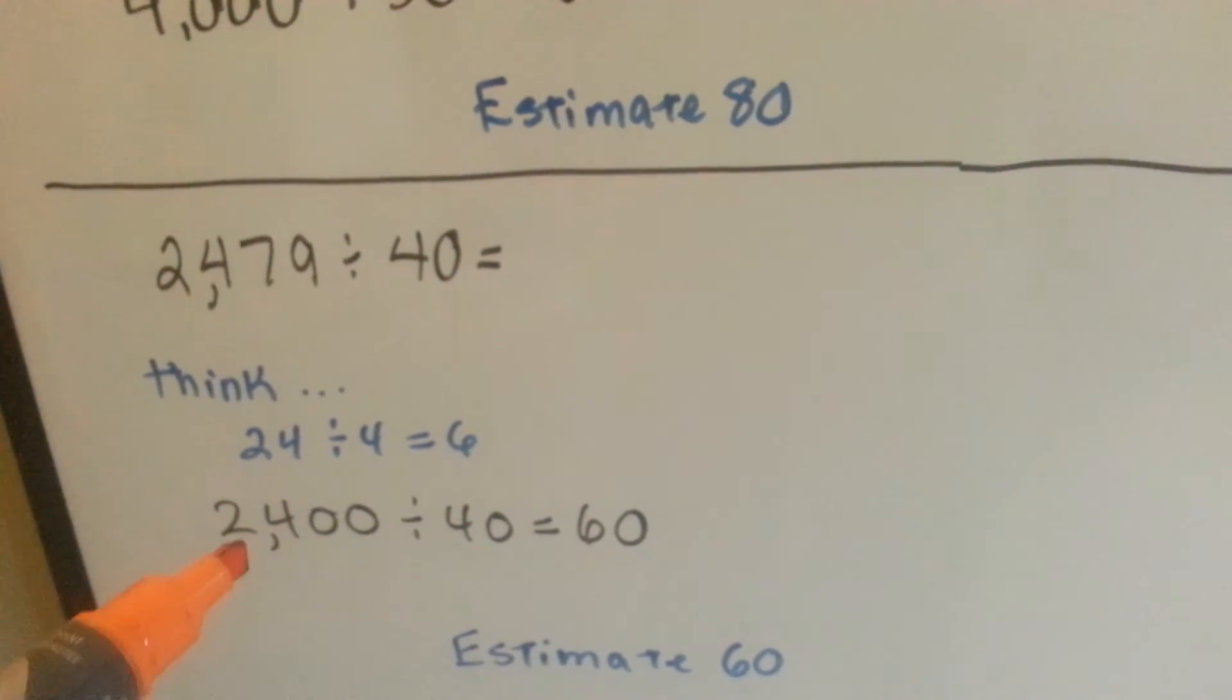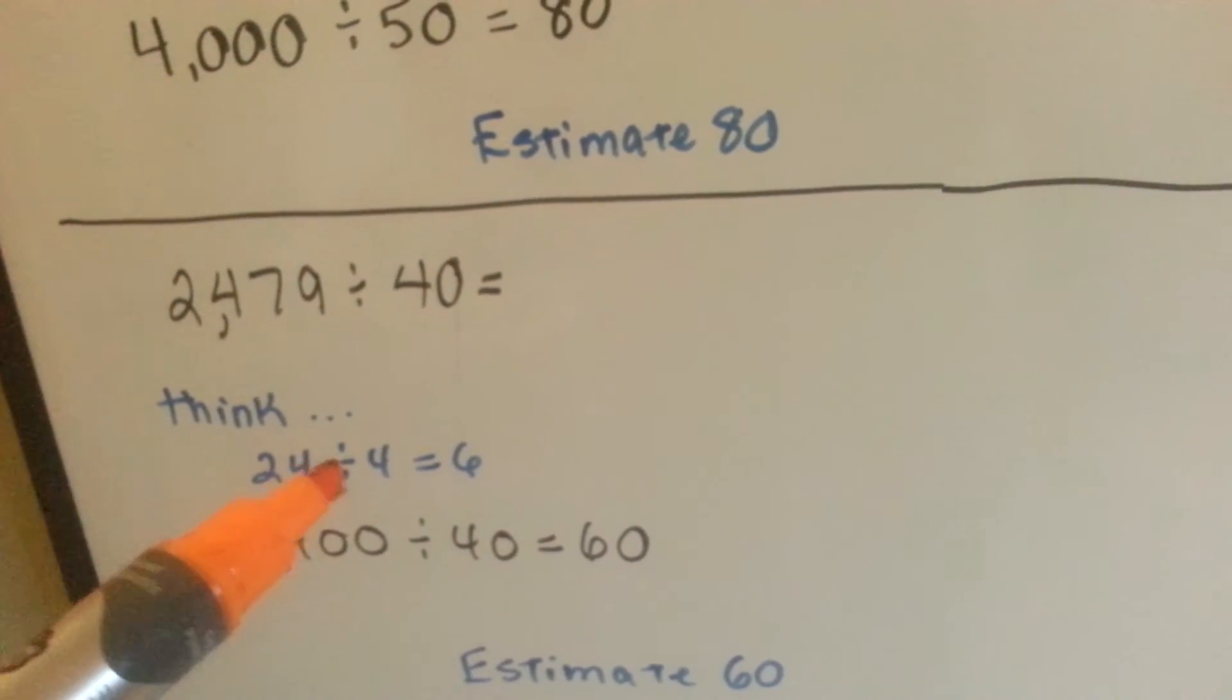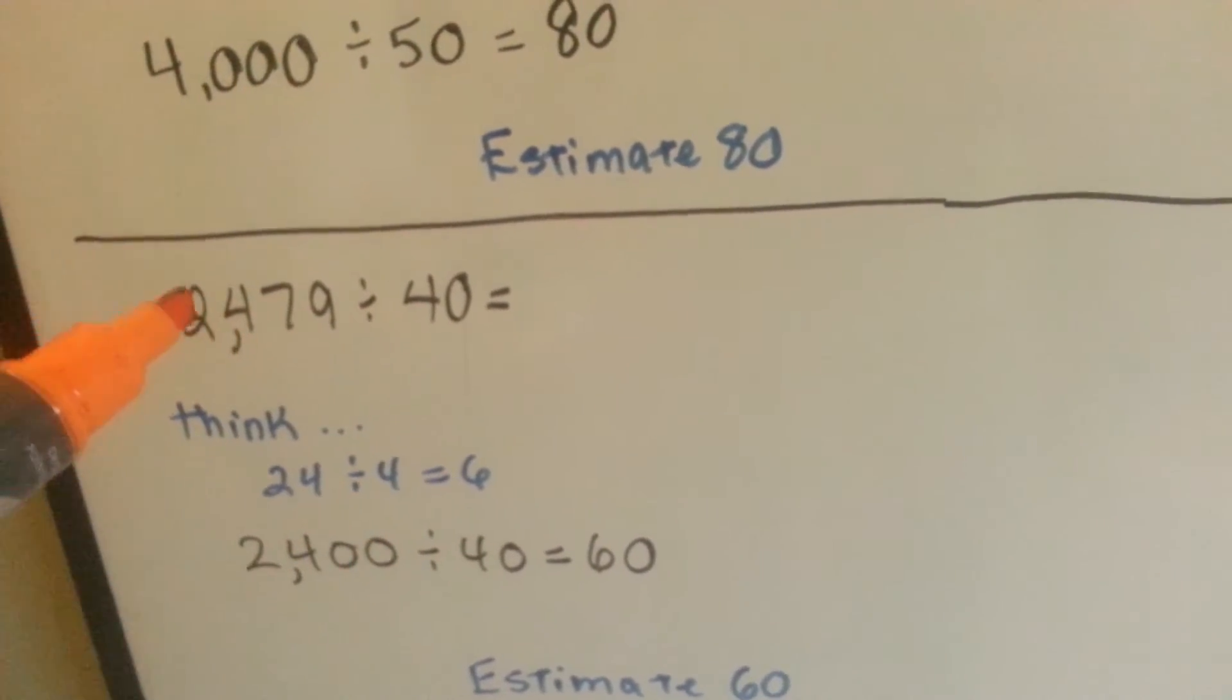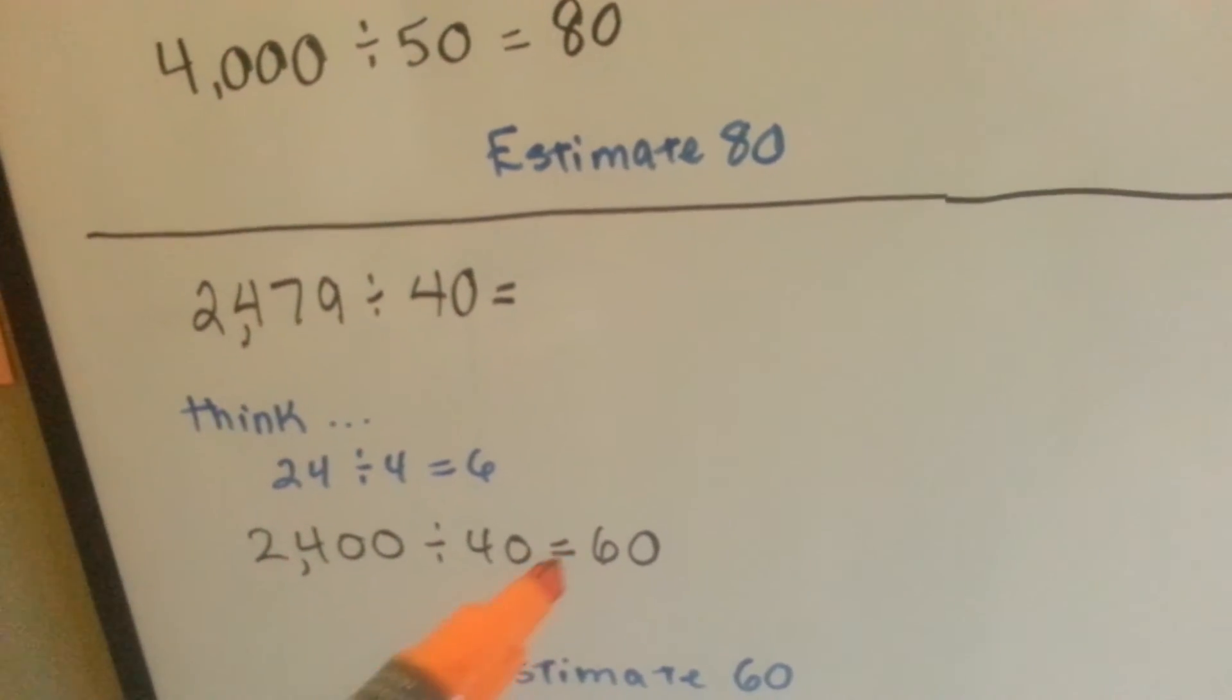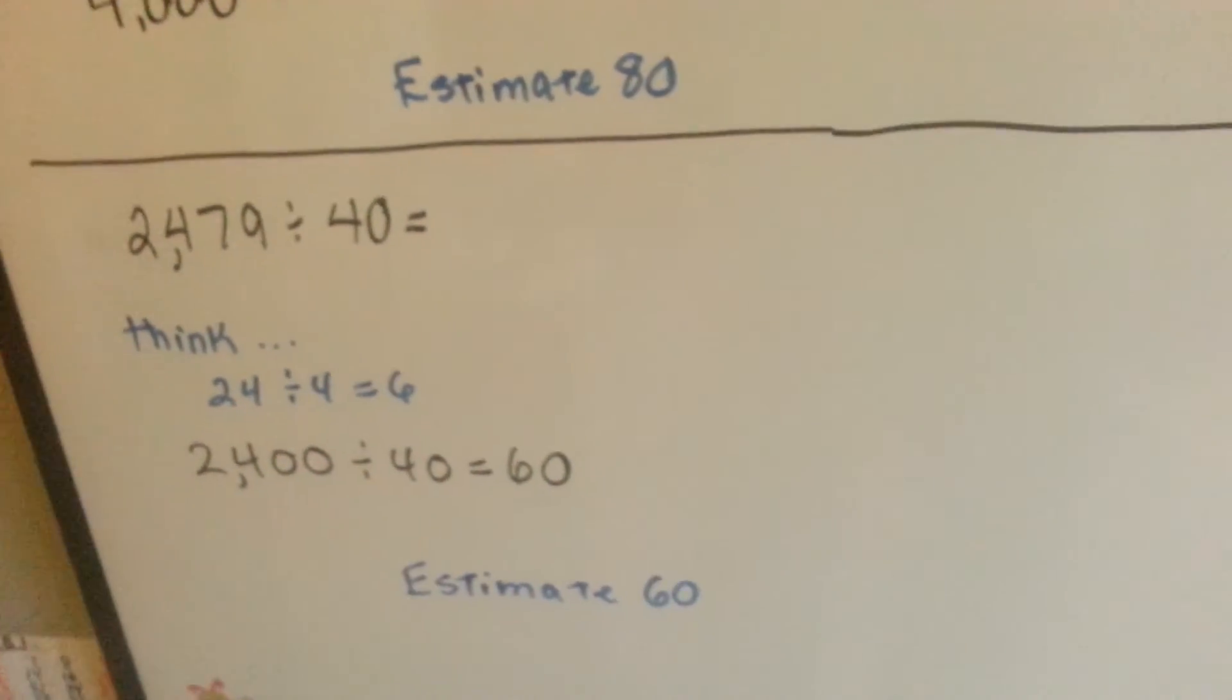We could round this one to 2,400 divided by 4 is 6. 2,400 divided by 40 would be 60. So our estimate is 60.